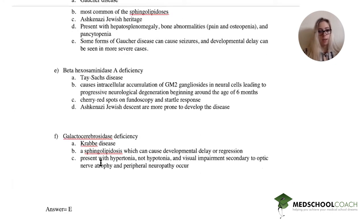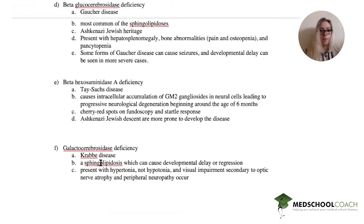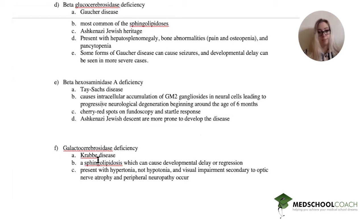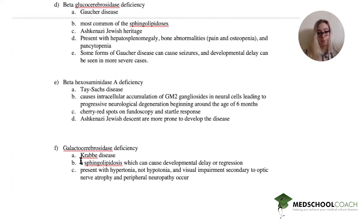The last option is galactocerebrosidase deficiency, which is also Krabbe disease. It's a sphingolipidosis that can cause developmental delay, and it presents with hypertonia — not hypotonia — as well as visual impairment secondary to optic nerve atrophy and peripheral neuropathy.